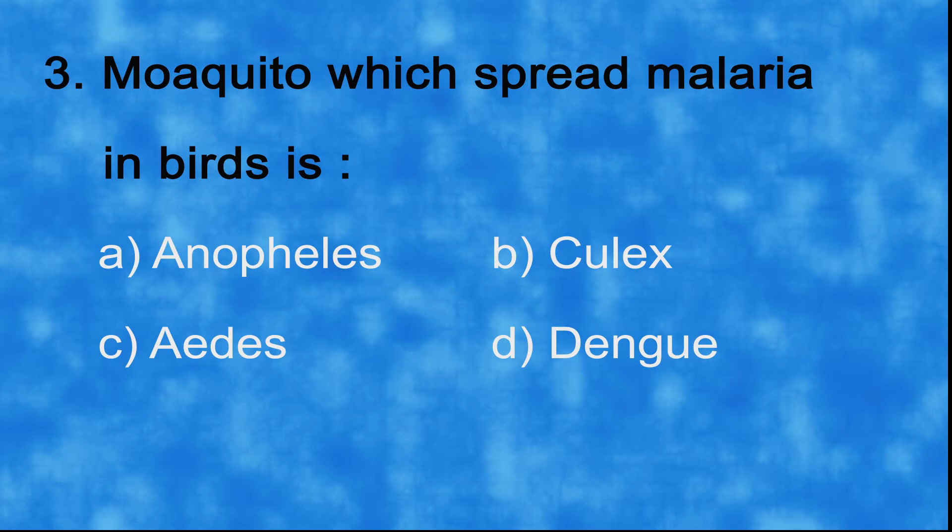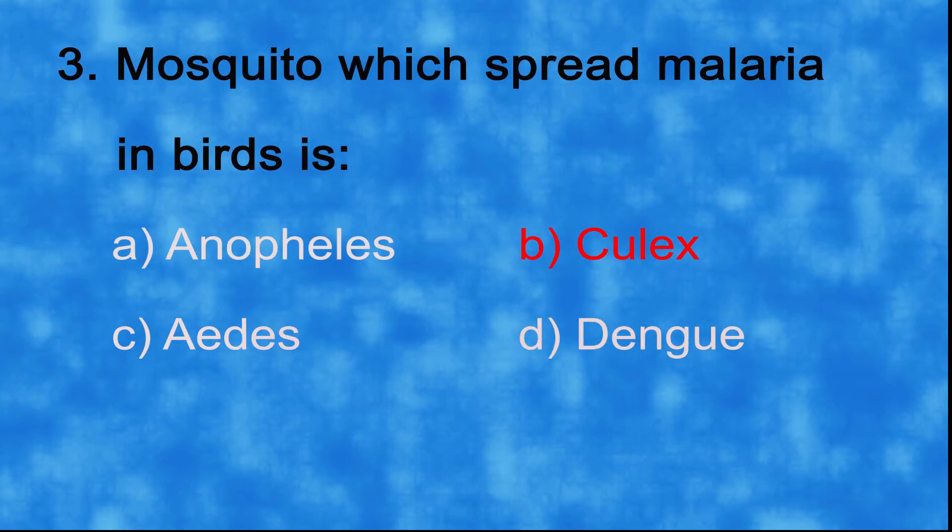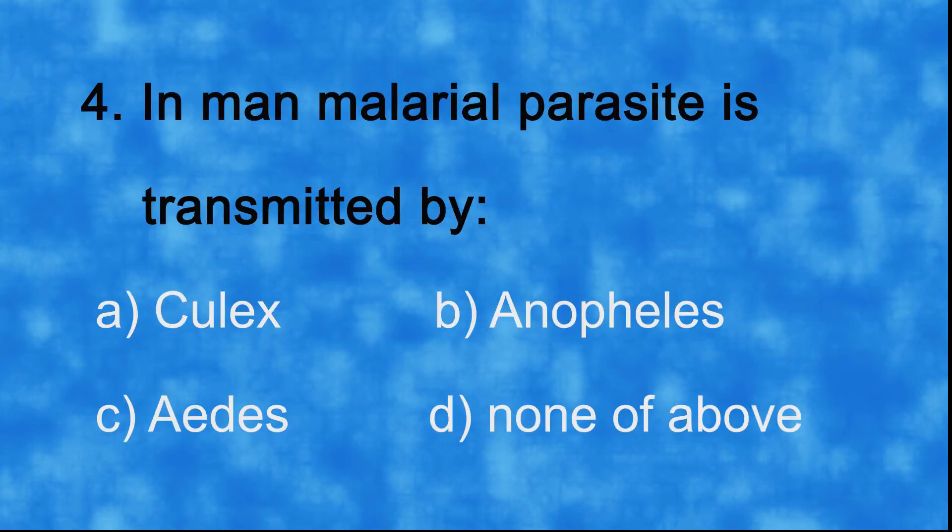Mosquito which spreads malaria in birds is a) Anopheles, b) Culex, c) Aedes, d) Daniell. And the correct answer is b) Culex. Number four: in man malaria parasite is transmitted by a) Culex, b) Anopheles,